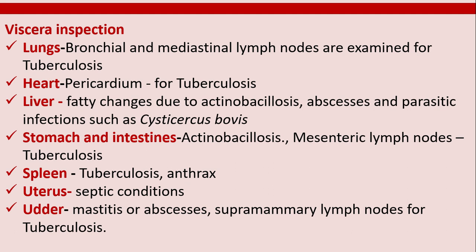Viscera inspection: lungs and bronchial and mediastinal lymph nodes are examined for tuberculosis. The heart and pericardium are checked for tuberculosis. The liver is examined for fatty changes, actinobacillosis, abscesses, and parasitic infections such as Cysticercus bovis. The stomach and intestines are checked for actinobacillosis, mesenteric lymph nodes for tuberculosis, spleen for tuberculosis and anthrax, uterus for septic conditions, udder for mastitis or abscesses, and supramammary lymph nodes for tuberculosis.